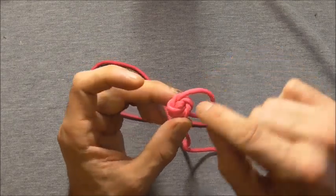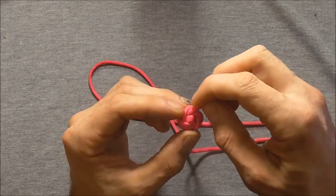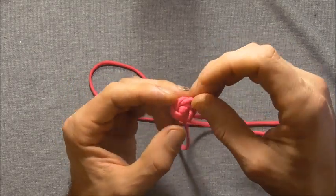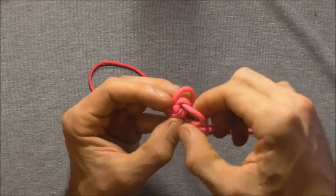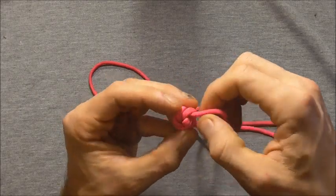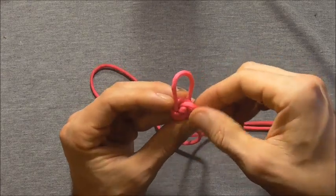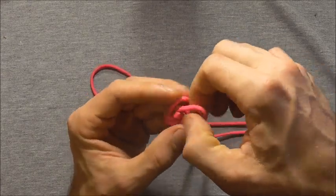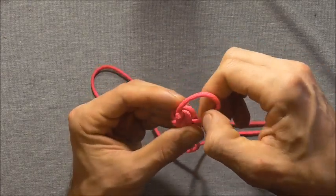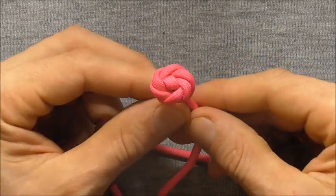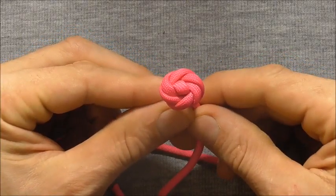So pull it down until it forms like a tiny little button there. And then we can just continue right around. And then that should be your finished knot.